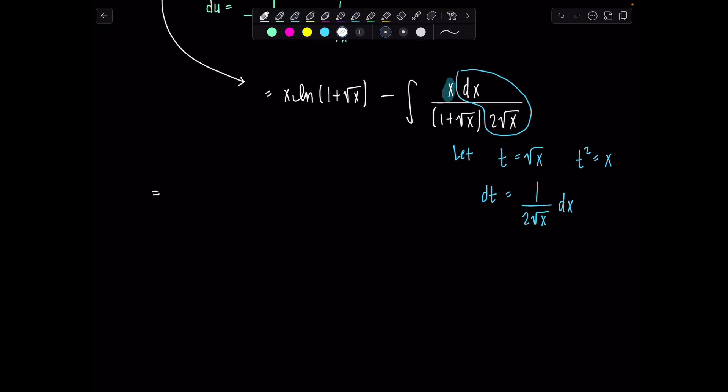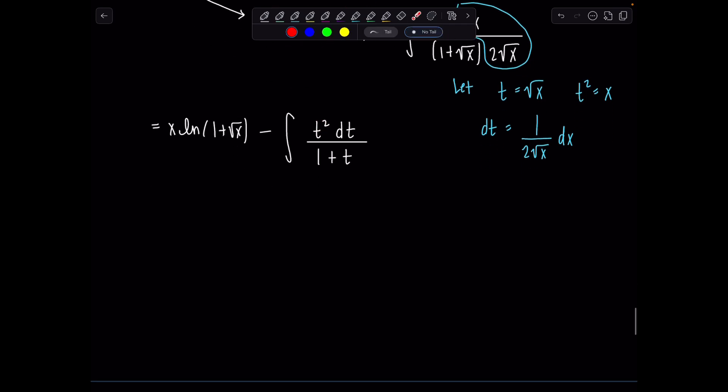So don't worry, this x ln(1 plus rad x) is just out here minding its business. Minus integral will have t squared dt over 1 plus t. Perfect. Okay, so from here how would you proceed? Well, degree of the numerator is higher than the degree of the denominator so we need to do some long division.